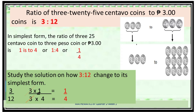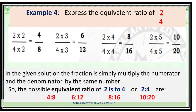Another example. Express the equivalent ratios of 2 is to 4. Study the solution: the fraction is simply multiplied — multiply the numerator and the denominator by the same number. So the possible equivalent ratios of 2 is to 4 are 4 is to 8, 6 is to 12, 8 is to 16, and 10 is to 20.